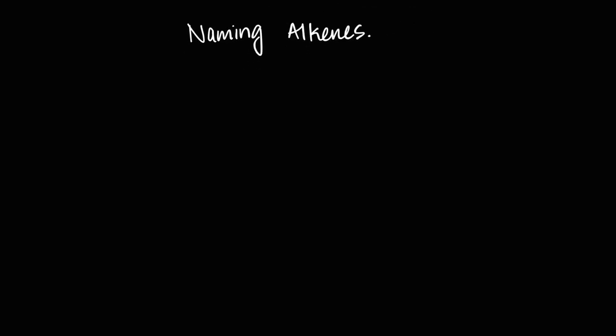Let's start with alkenes. Alkenes have to have at least one carbon-carbon double bond, and that means the stem suffix will be '-ene.' The one key rule is that you want to give the double bond the lowest possible number. Find the parent chain — the longest carbon-carbon chain that contains the double bond — then number from the end that gives the double bond the least number, and then all other rules apply.